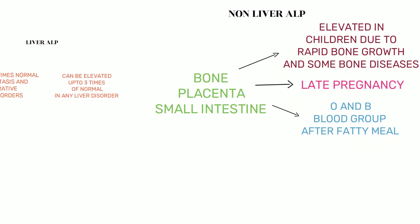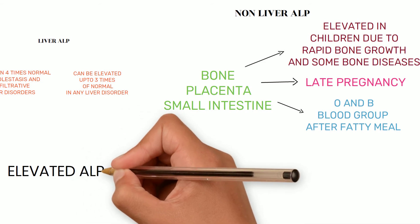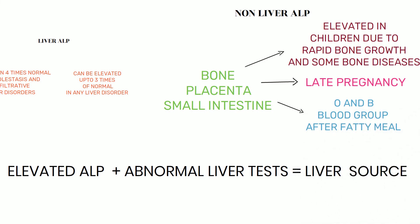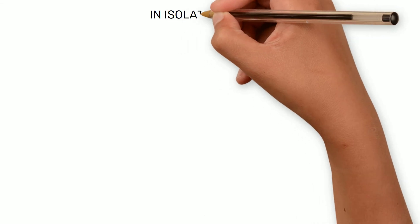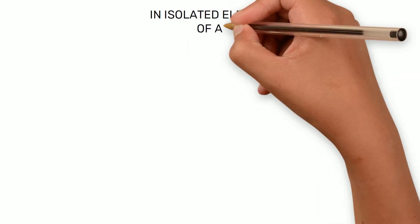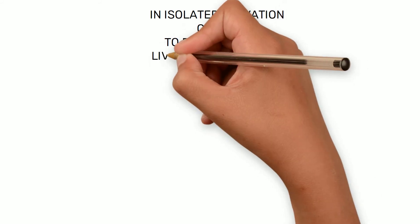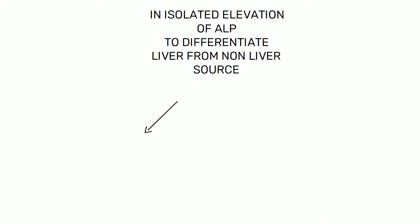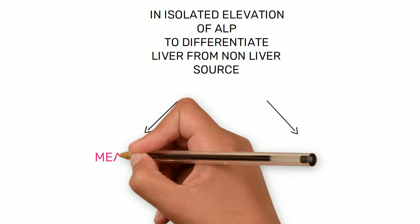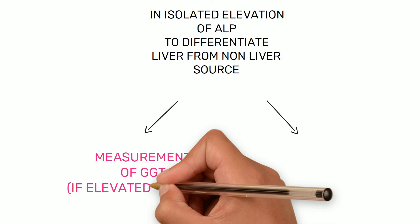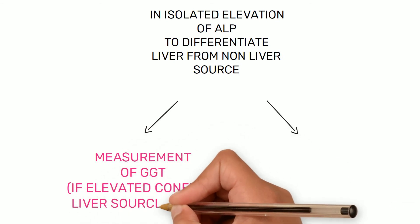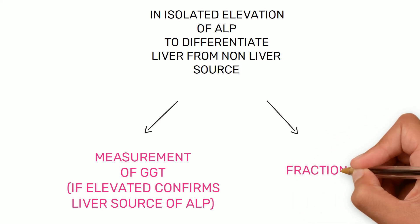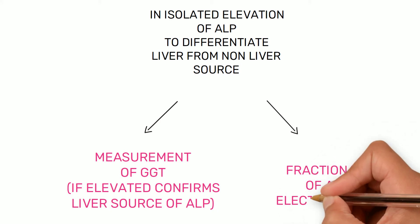When there is elevated ALP along with abnormal liver tests, it indicates that the ALP is from the liver. But when there is isolated elevation of ALP, there are two ways to differentiate whether it is from liver or non-liver sources. The practical way is to measure GGT — if GGT is also elevated, it indicates the ALP is from the liver. The second way is fractionation of ALP isoenzymes by electrophoresis.